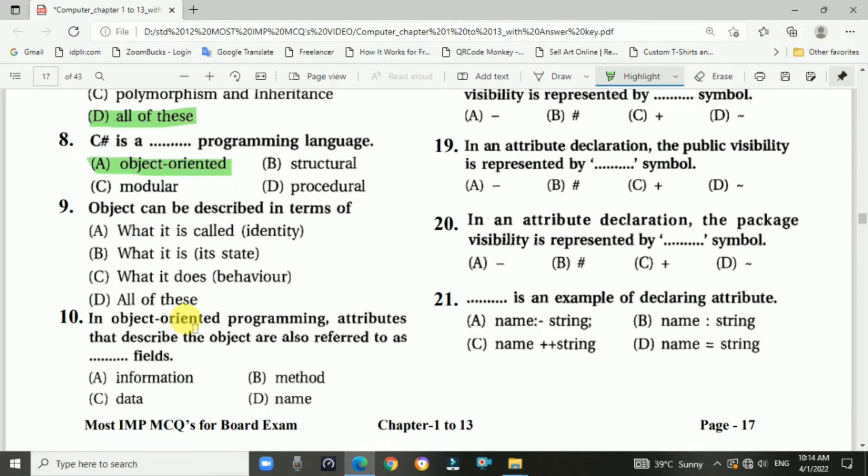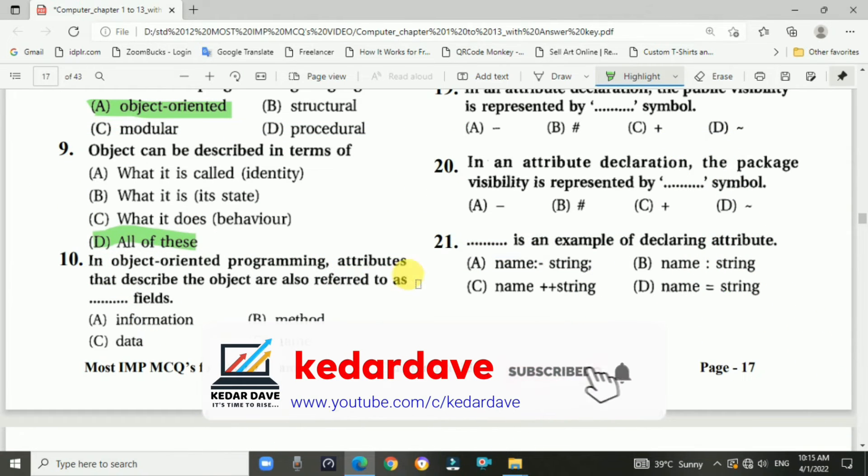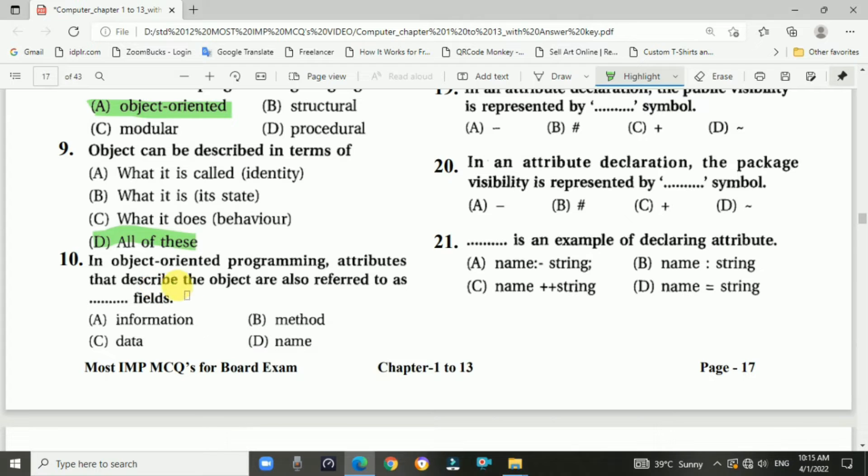Question number nine: Object can be described in terms of option all of these, right? What it is called, what it is, and what it does. Question number ten: In object-oriented programming, attributes that describe the object are also referred to as blank field. The right answer is C, data.